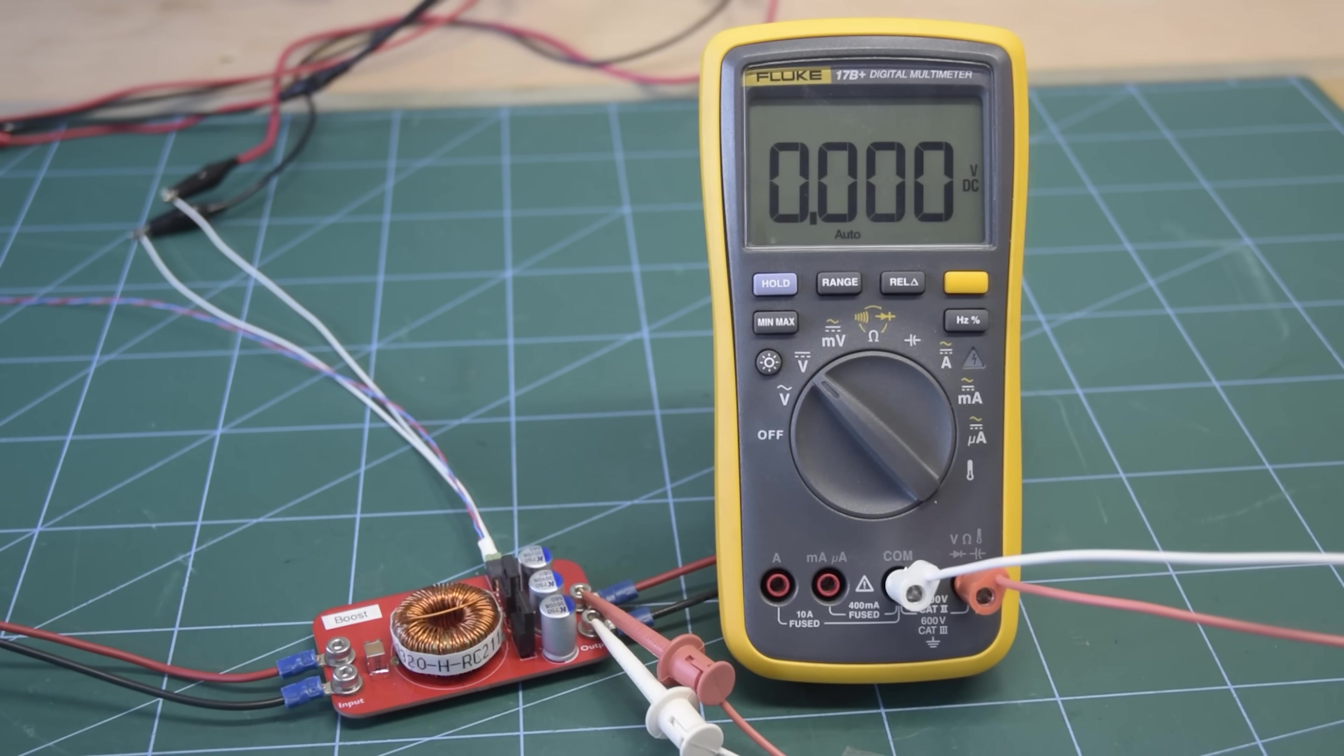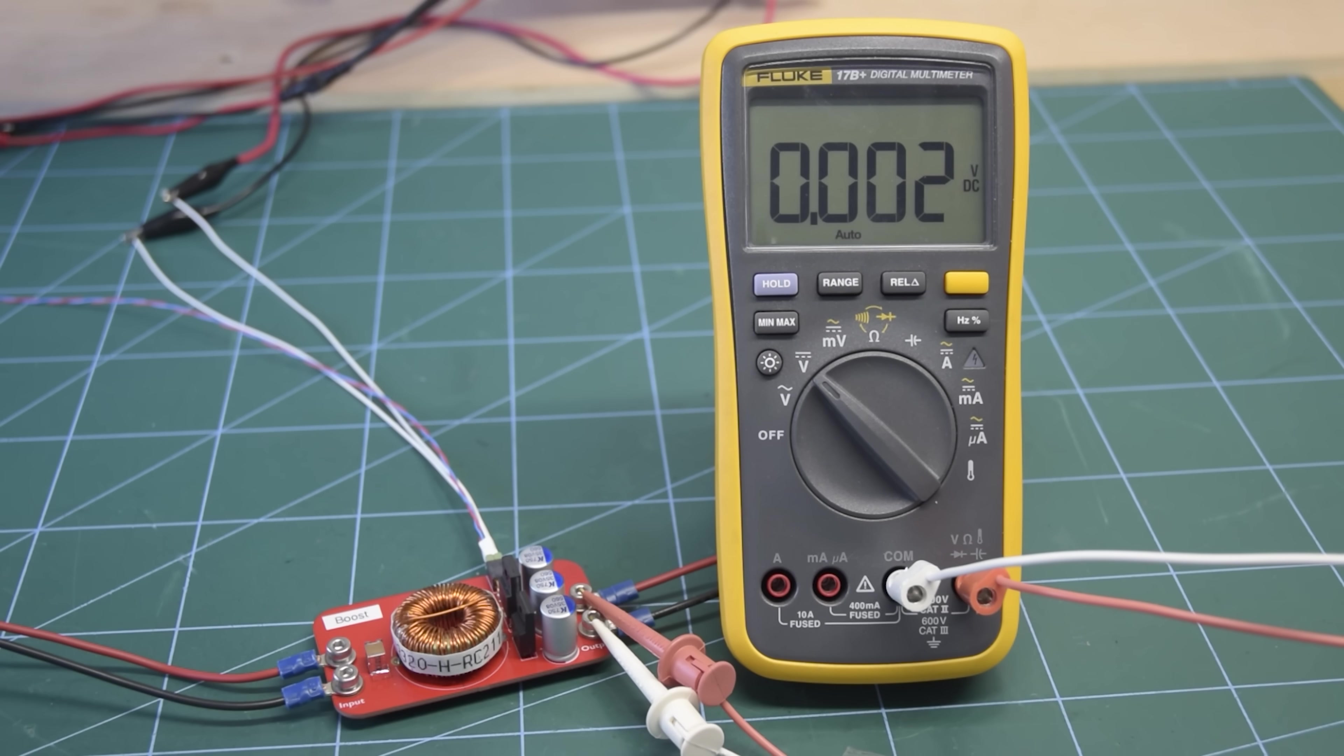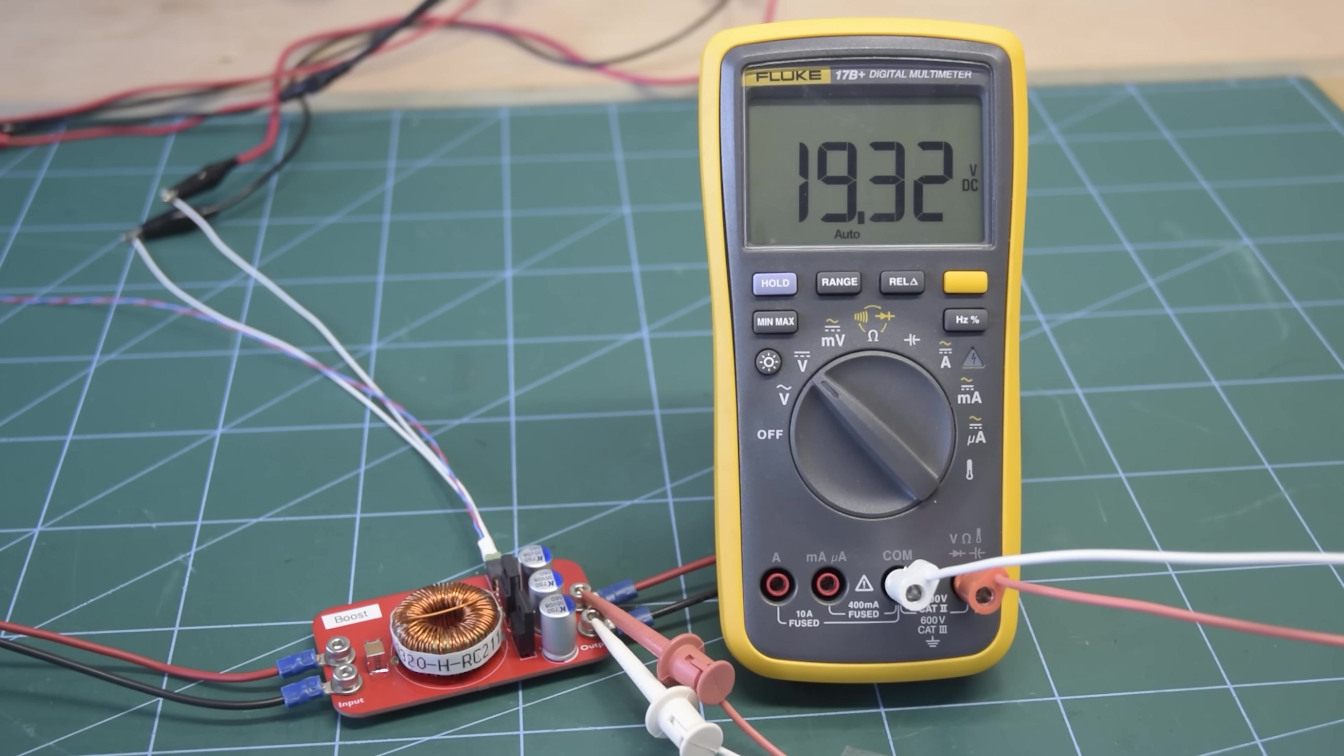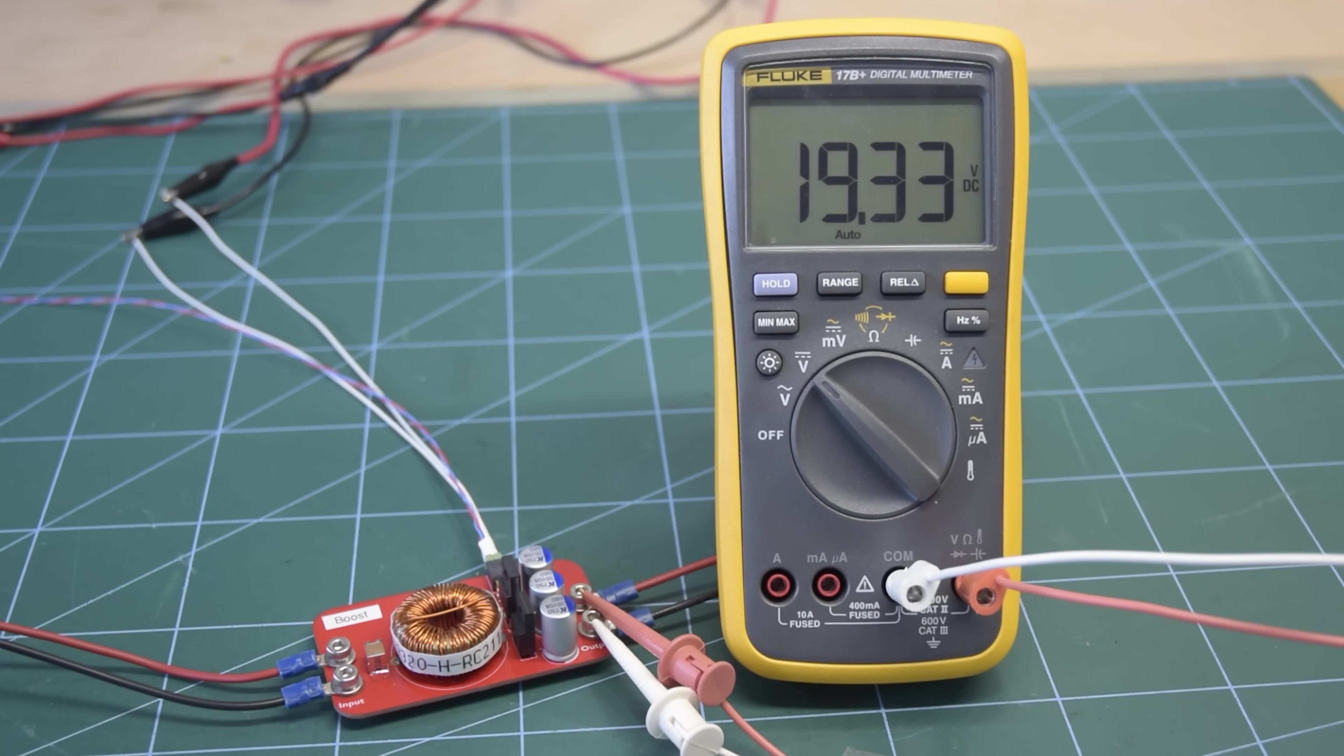And now let's have a go with the boost converter. Let's see how this behaves with a 50% duty cycle. Ah, well it's certainly boosting. We're getting nearly 20 volts out from our 10 volt input. So once again, the boost converter seems to be doing as we'd expect.